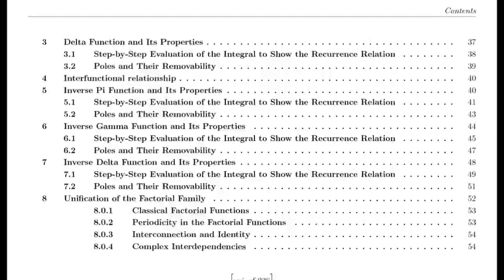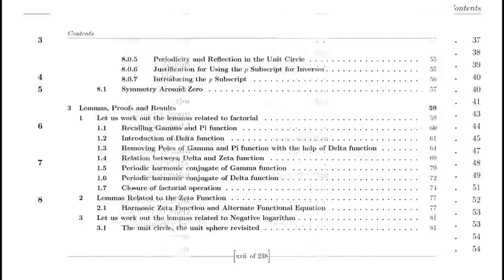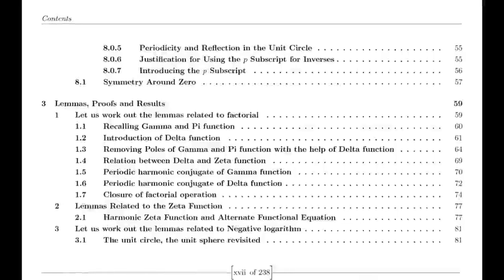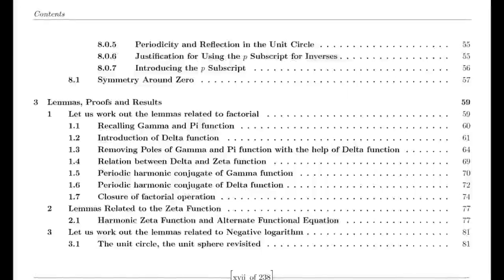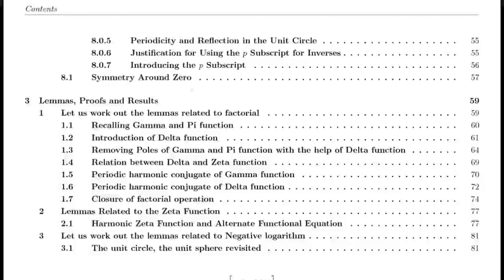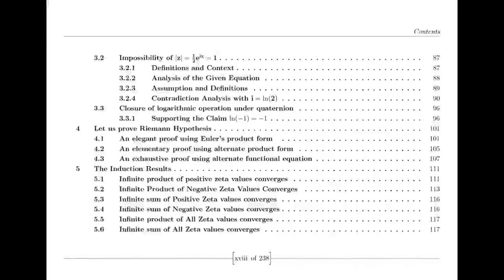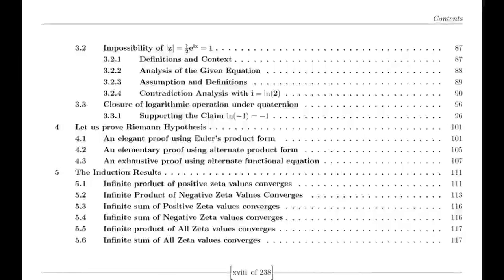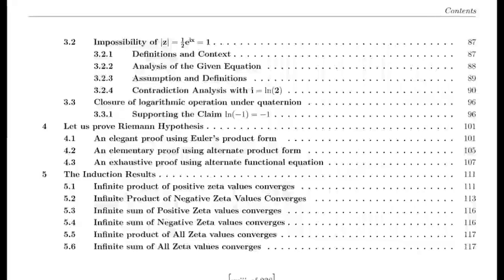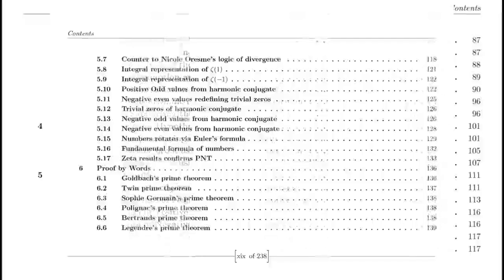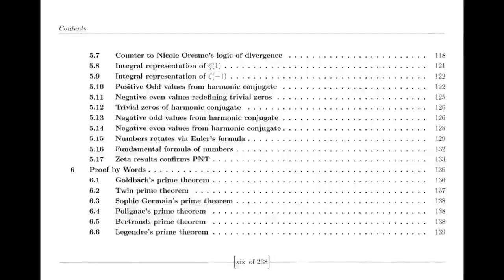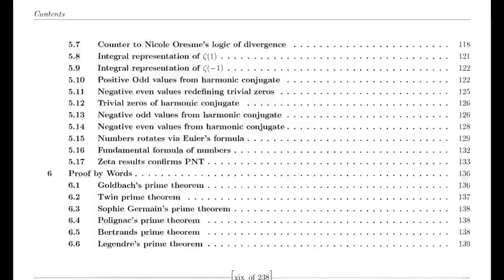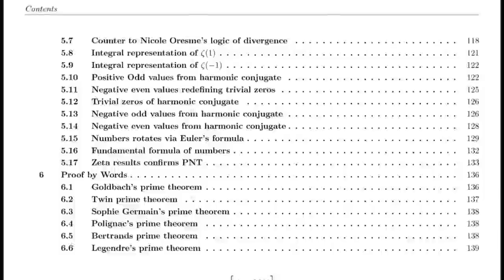Dirichlet Eta function. Riemann was also influenced by the Dirichlet Eta function, defined by an alternating series. This function is closely related to the zeta function and provides valuable insights into its behavior, particularly for values of s less than 1. The relationship between the Eta function and the zeta function is encapsulated in a simple formula involving the gamma function and powers of 2, which helps in understanding the zeta function's properties across different regions.